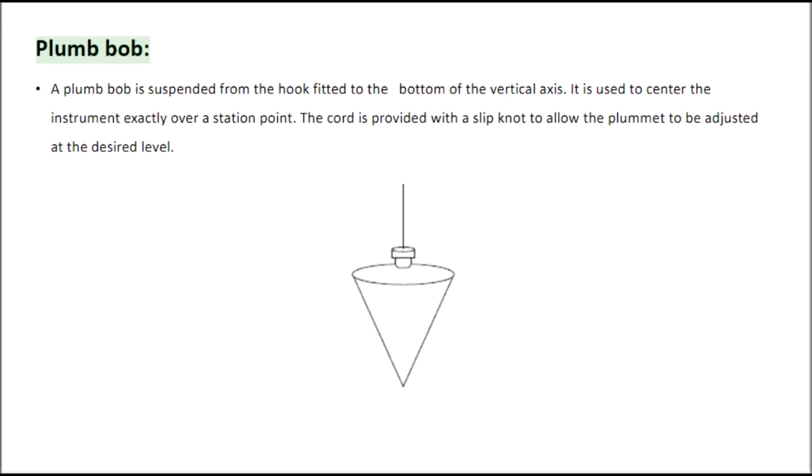Plumb Bob. A plumb bob is suspended from the hook fitted to the bottom of the vertical axis. It is used to center the instrument exactly over a station point. The cord is provided with a slip knot to allow the plummet to be adjusted at the desired level.